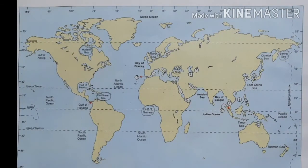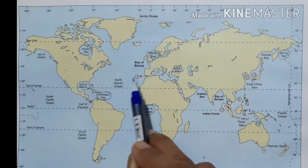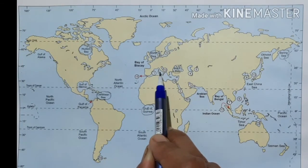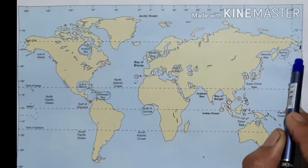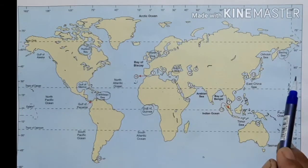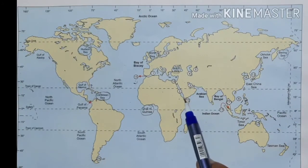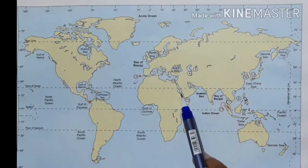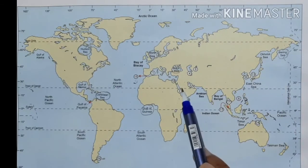A strait is a water body that connects two large water bodies and at the same time separates two large landmasses. The Strait of Gibraltar connects the Atlantic Ocean and the Mediterranean Sea, and separates Europe and Africa. The Bering Strait connects the Arctic Ocean and the Pacific Ocean, and separates Asia and North America. Another important strait is the Bab-el-Mandeb, which connects the Red Sea and the Gulf of Aden and separates Africa from the Arabian Peninsula.